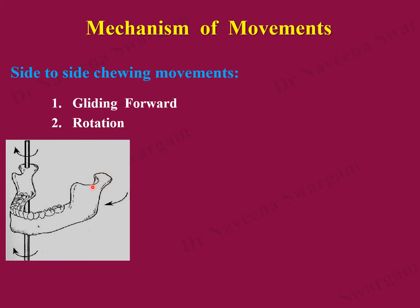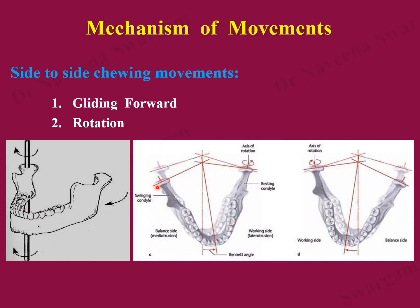The mechanism of side-to-side chewing movements: each movement takes place in two phases — gliding forward and rotation of the head of the mandible around a vertical axis. The right head of the mandible first glides forward along with the articular disc in the upper meniscotemporal compartment, then rotates medially around a vertical axis passing through the opposite ramus of the mandible until the head moves back into the mandibular fossa. Similarly, the left head of the mandible glides forward and rotates medially, producing alternate side-to-side movements.